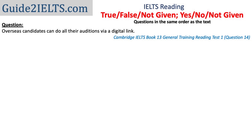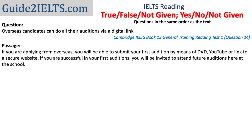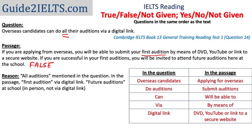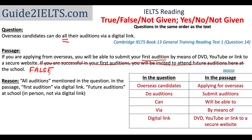Let's look at another example. The question says: 'Overseas candidates can do all their auditions via a digital link.' YouTube or a link to a secure website essentially means a digital link. What we know from the passage is that only the first audition can be done via a digital link. The answer is False because of just one word in the question: 'all.' The auditions after the first will have to be in person at the school. If that sentence were removed from the passage, the answer would be Not Given, because we'd only have information about the first audition.